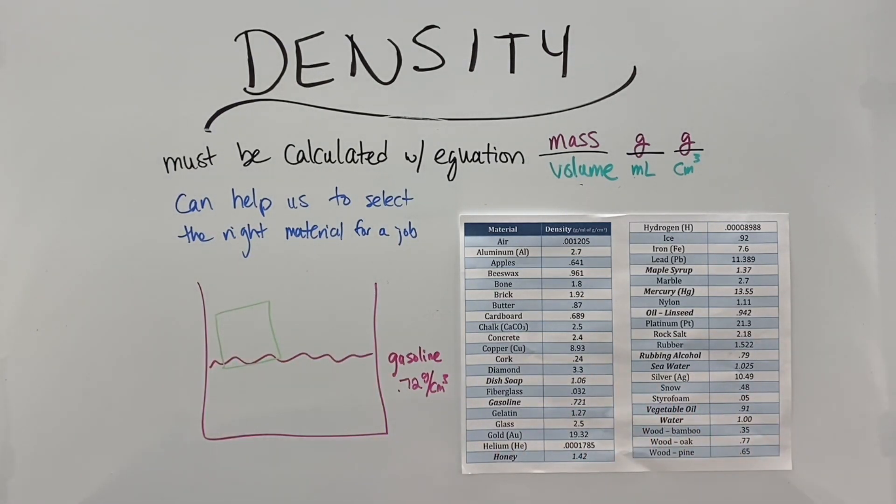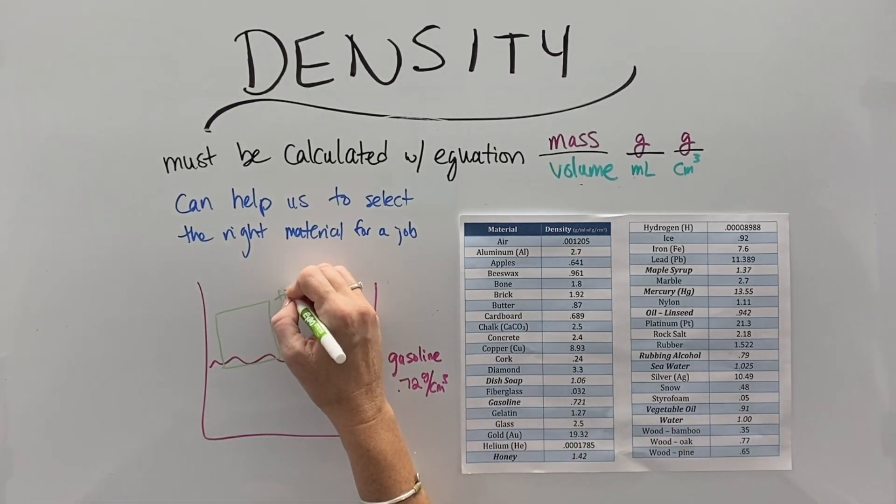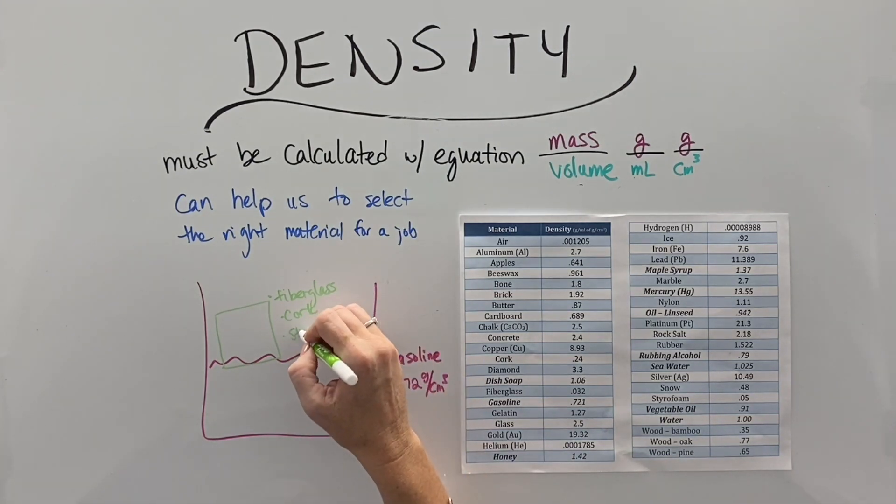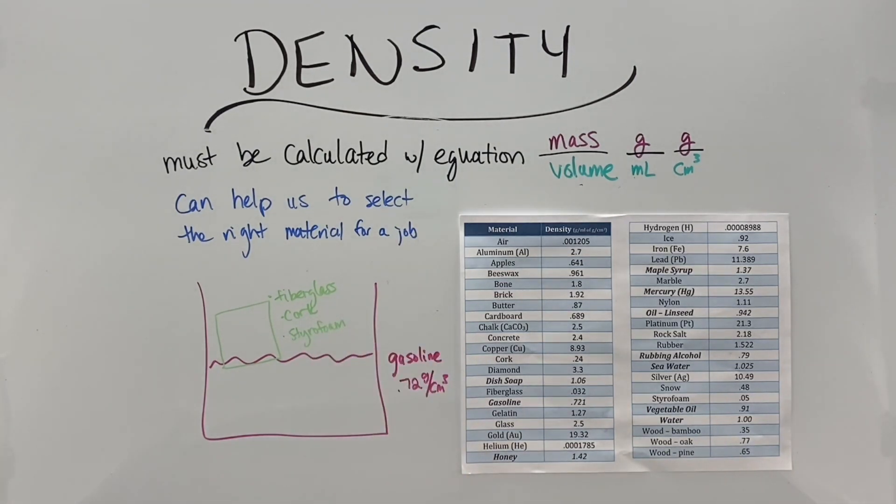If we want something to float on gasoline, it's going to have to have a pretty low density, like fiberglass, cork, or styrofoam. Things we would typically think of as floating are not necessarily going to float on gasoline, like ice or butter, because they are more dense than gasoline.